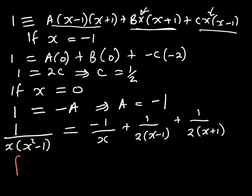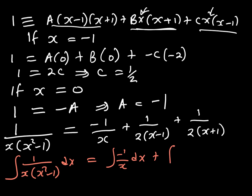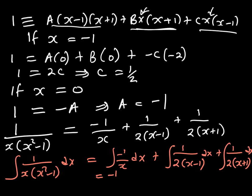So integrating 1 over x times x squared minus 1 dx is the same as integrating negative 1 over x dx, plus integrating 1 over 2 times x minus 1 dx, plus integrating 1 over 2 times x plus 1 dx. This function is easy to integrate. When you integrate 1 over x you get a natural logarithm, so this gives minus ln x plus one half ln x minus 1 plus one half ln x plus 1, plus a constant of integration.